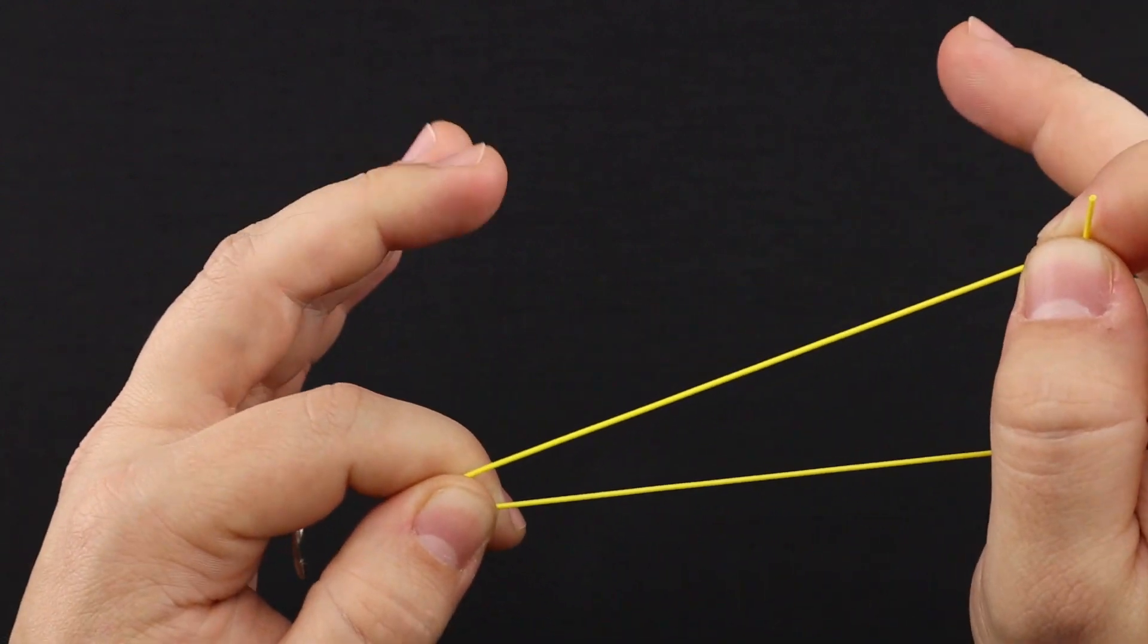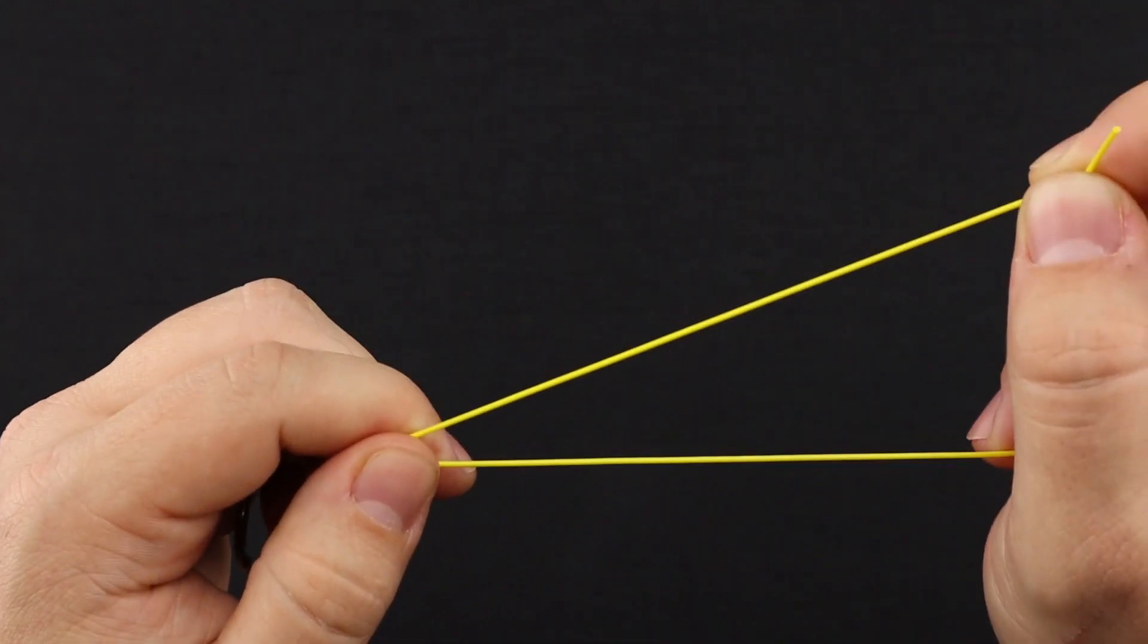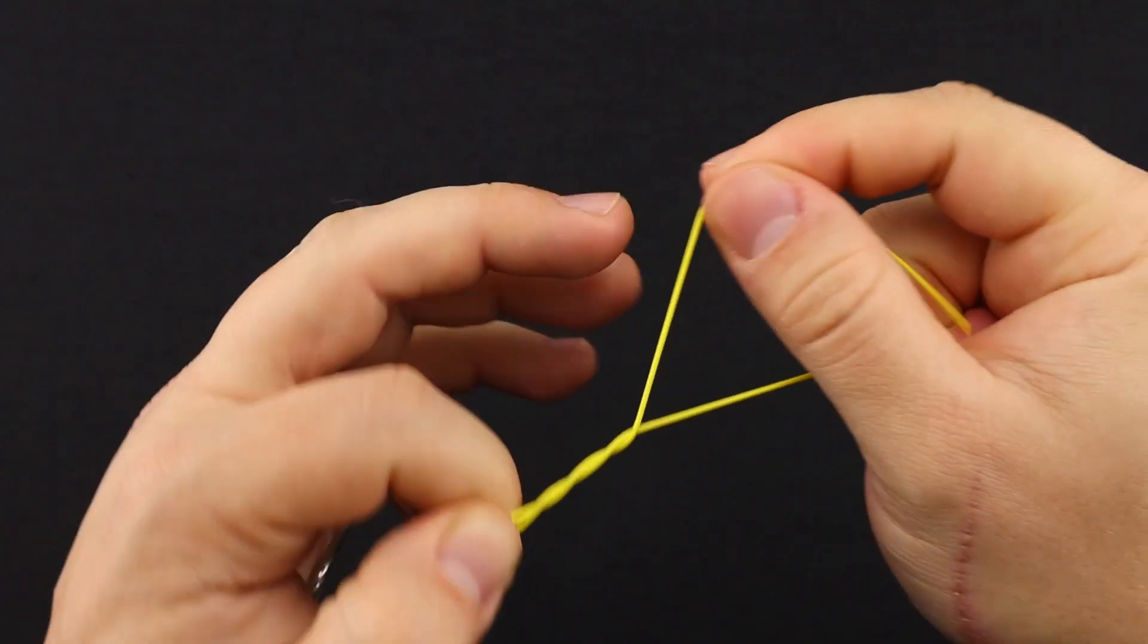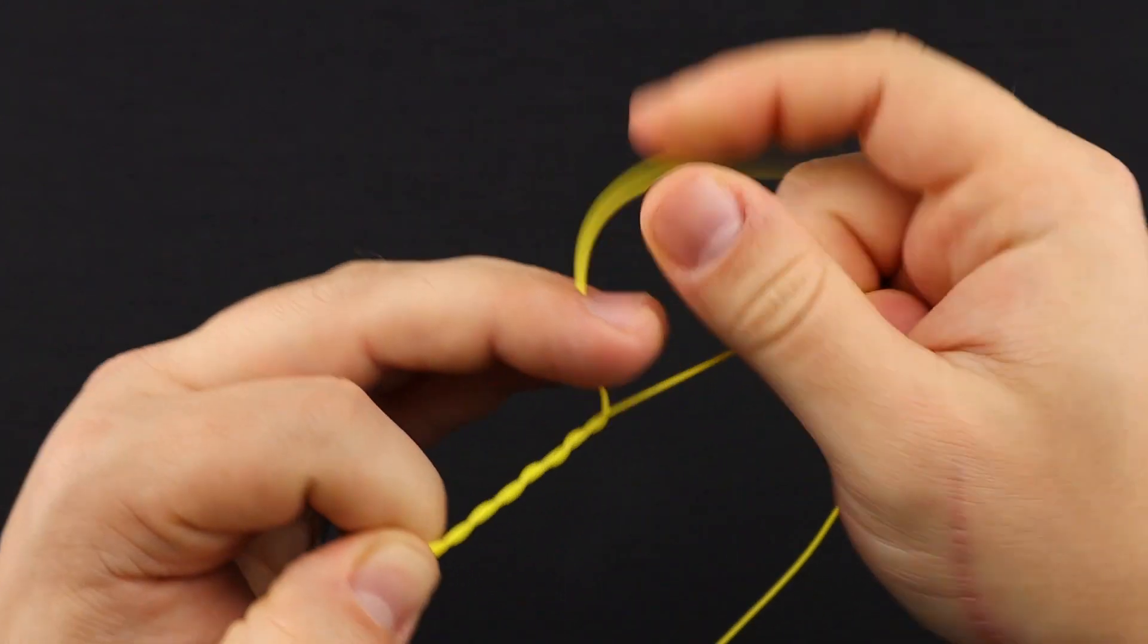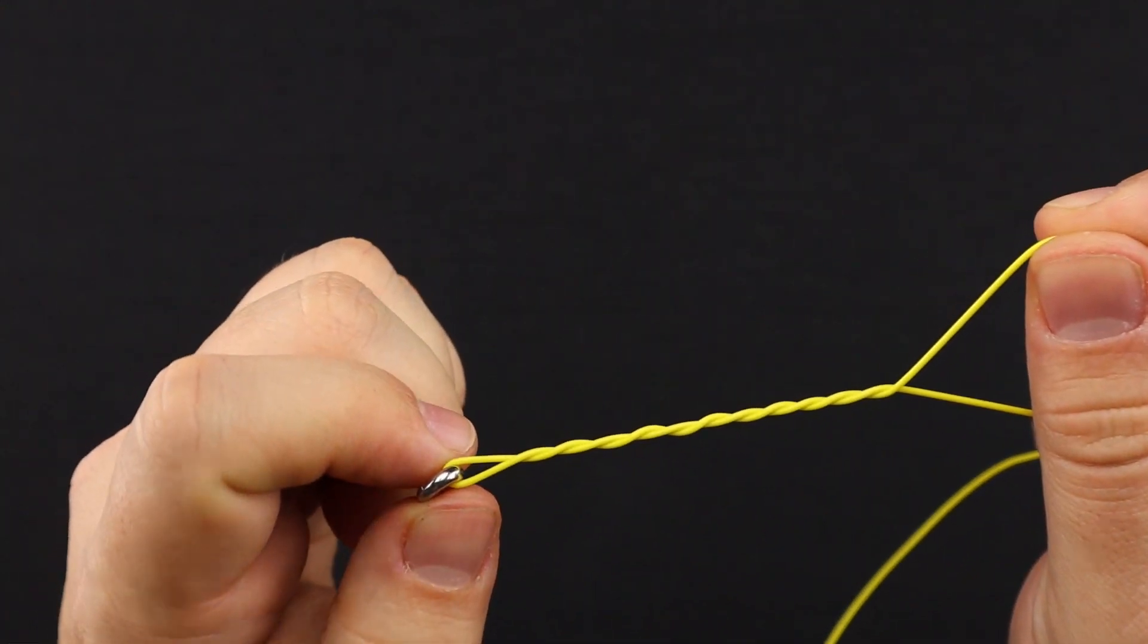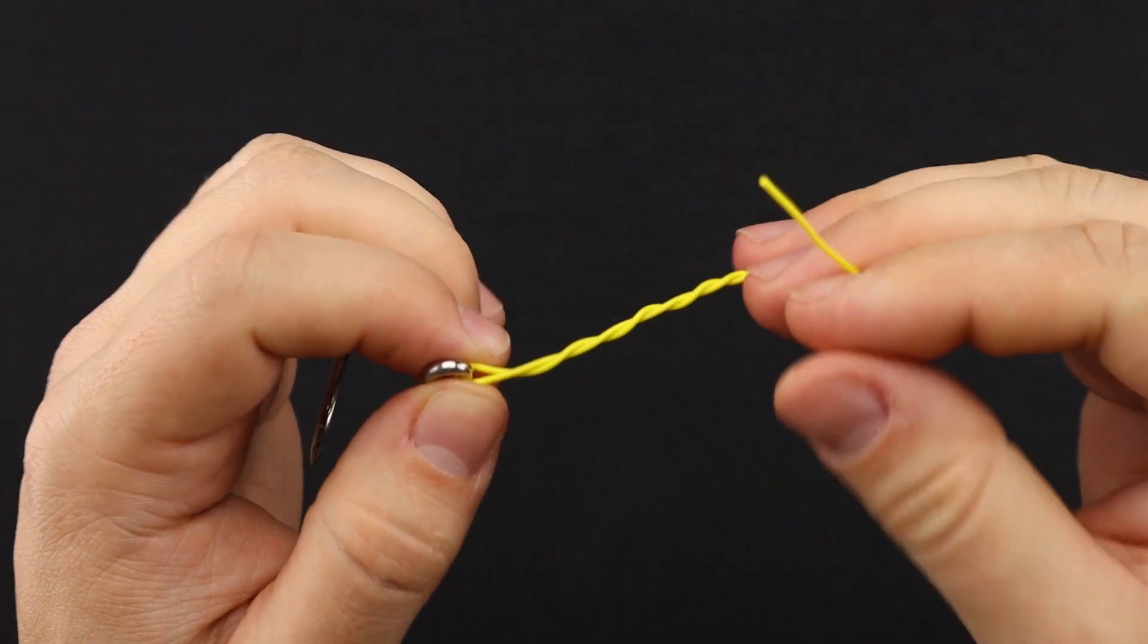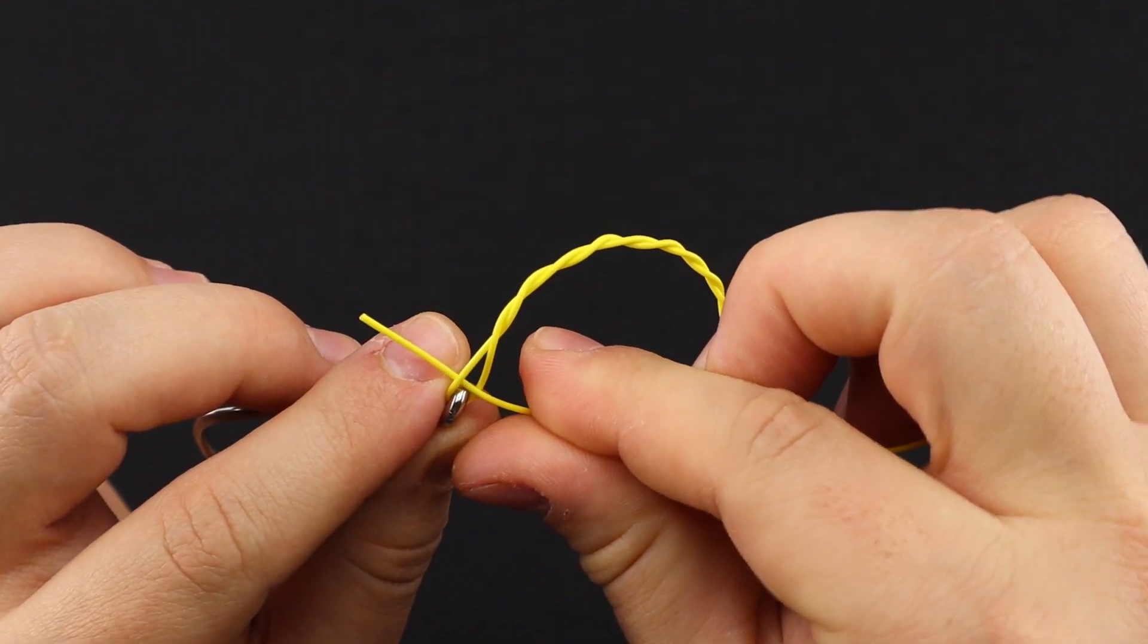I like to do about four to six wraps with a heavier line and six to ten wraps with a lighter line. With this line I'm going to do six wraps, so we'll go with one, two, three, four, five, and six. Over here on the left you're gonna have a little loop that you created by making these wraps. This tag end is going to come back and through that loop just like so.